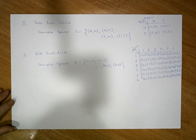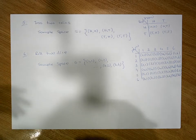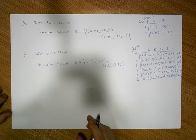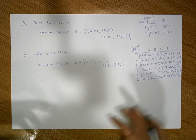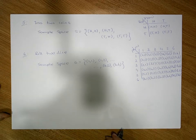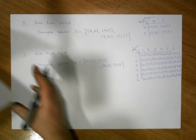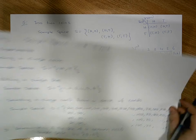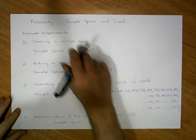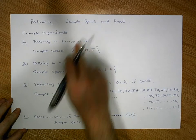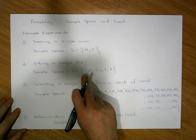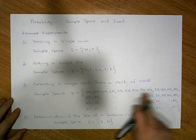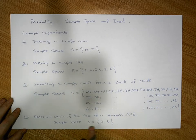We can make this even more complicated by throwing more dice into the mix, or more coins into the mix, or selecting more cards from a deck of cards, and so on. But the most important thing to recognise is that every experiment that we perform has a sample space. The sample space is simply a list of all the possible outcomes that could occur when we perform the experiment.